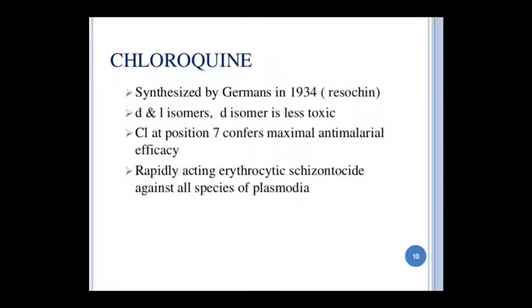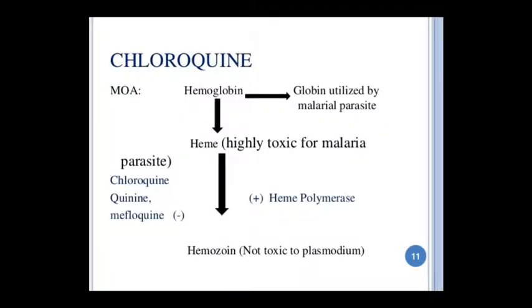The next drug is Chloroquine, made in Germany in 1934. D and L isomers exist; the L isomers are slightly more toxic. Chloroquine has maximal anti-malarial efficacy due to its 7th position substitution. It is a rapid erythrocytic schizonticidal agent — it kills Plasmodium schizonts in all species, so it is very effective.